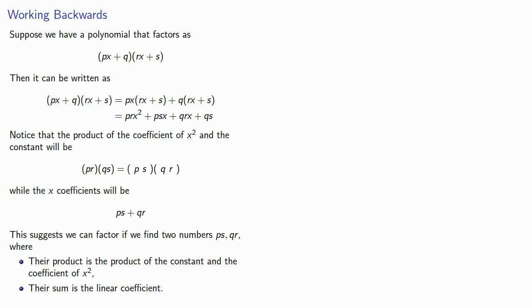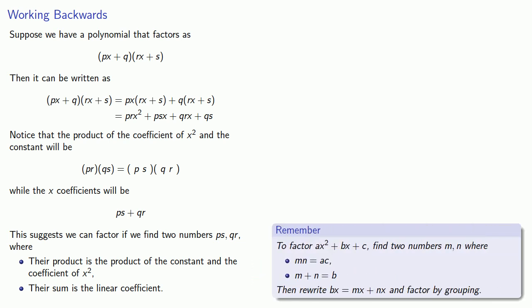And so we might put it this way. To factor ax² + bx + c, find two numbers, m and n, where m times n is ac, the product of the squared and constant coefficients, and their sum is equal to b, the coefficient of the linear term. And then we'll rewrite bx as mx + nx, then factor by grouping.